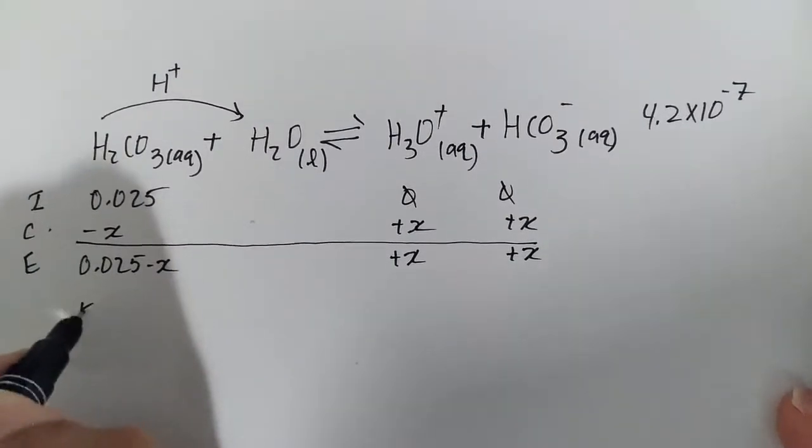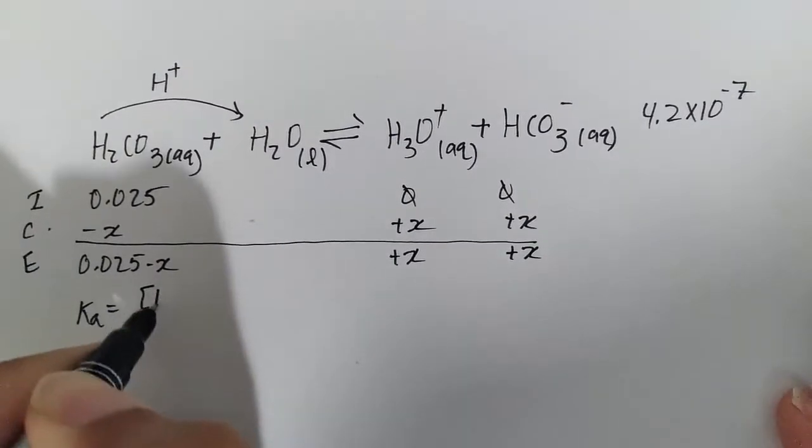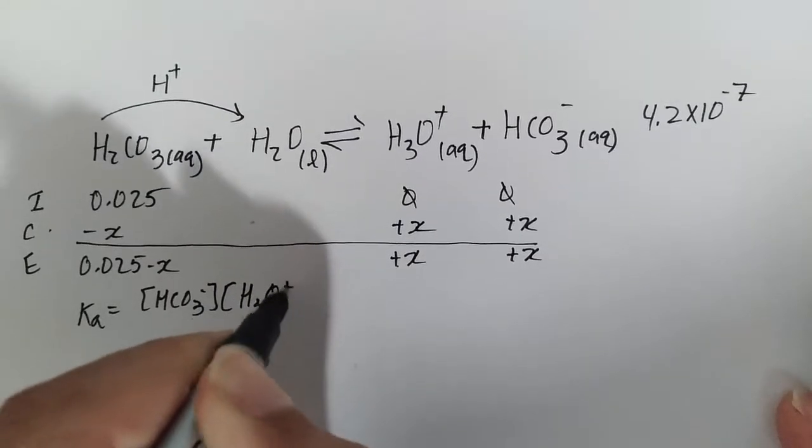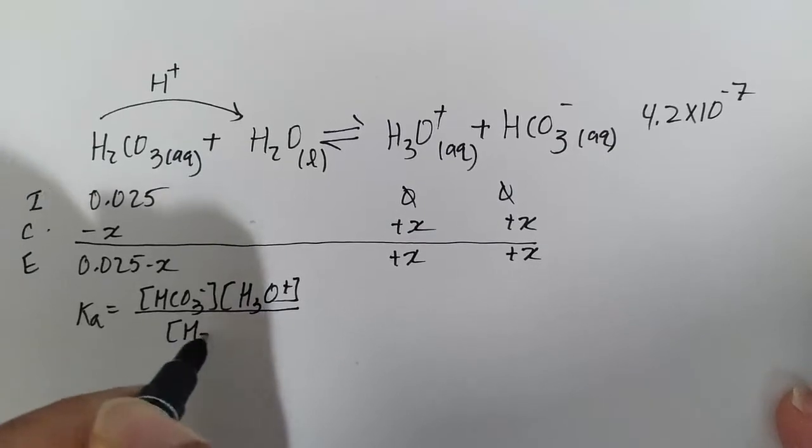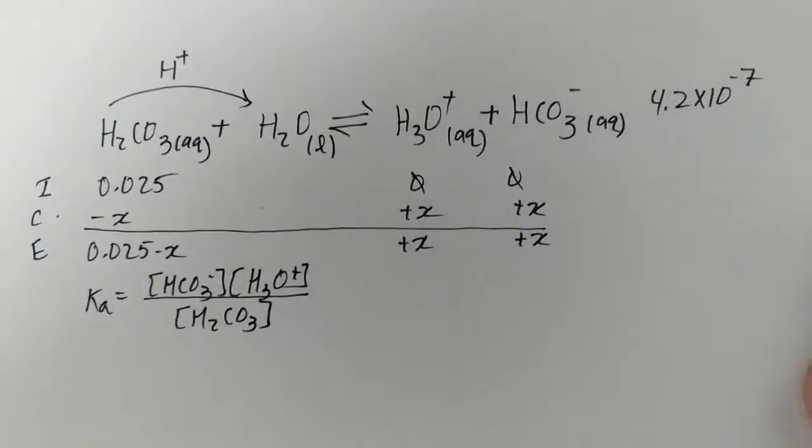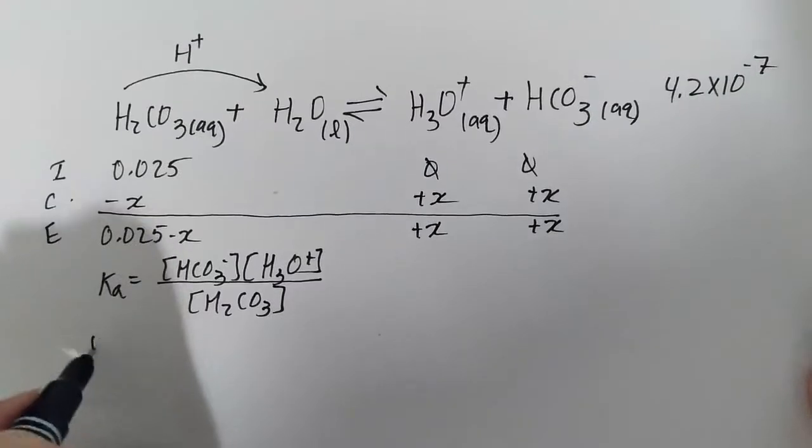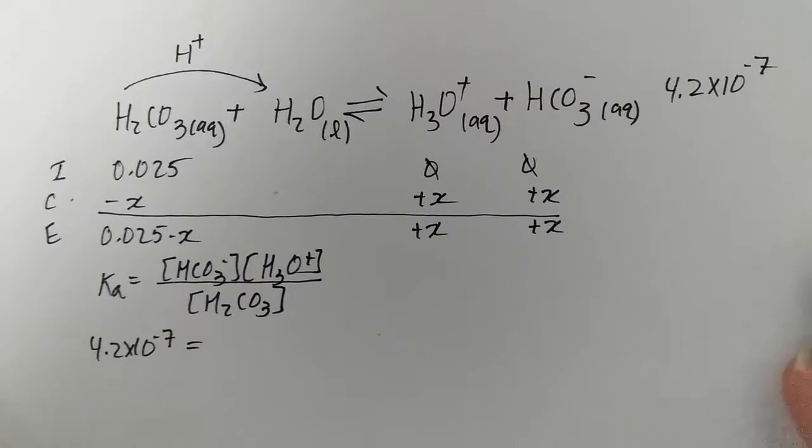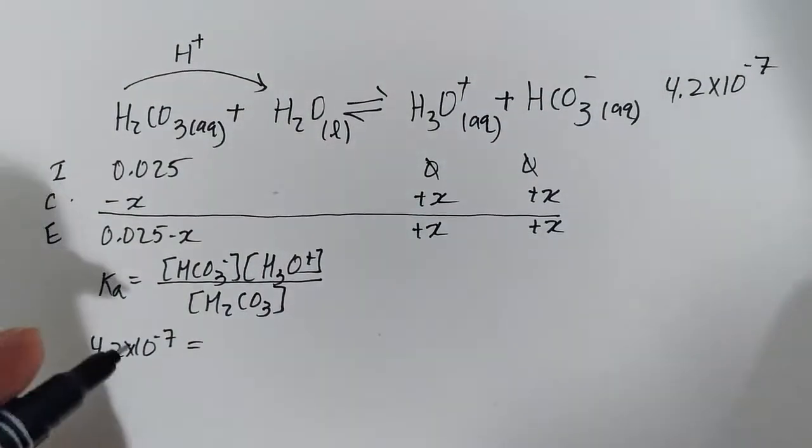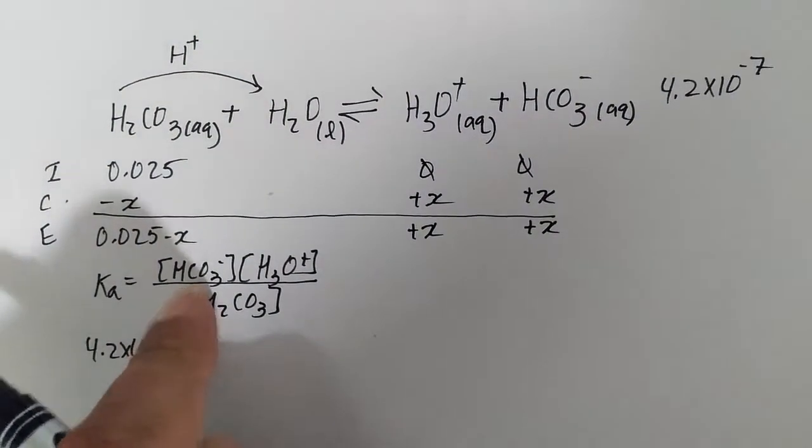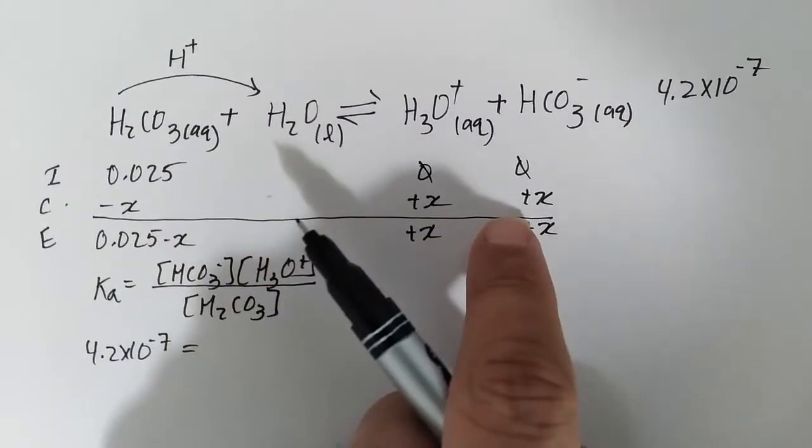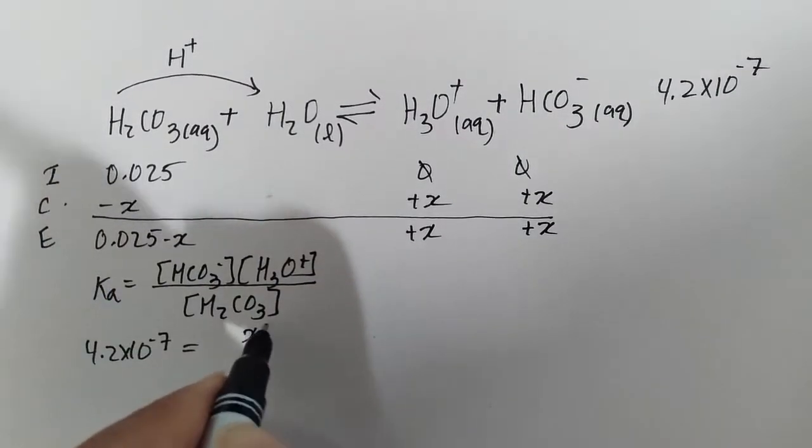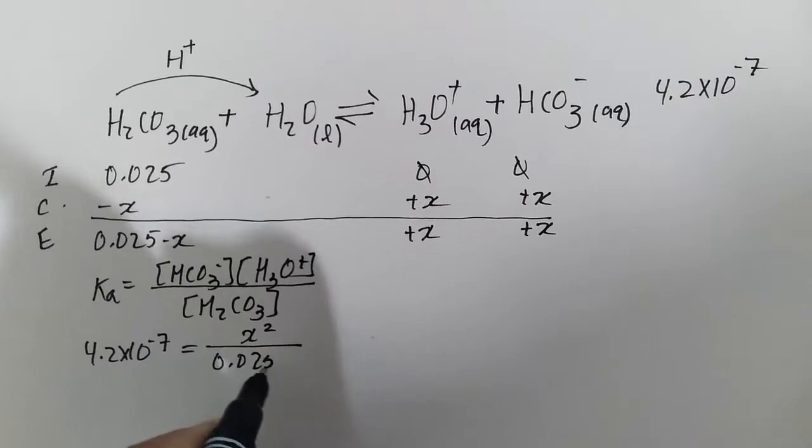The Ka for this reaction is going to be bicarbonate HCO3^- times H3O+ divided by carbonic acid H2CO3, and 4.2 × 10^-7 is the Ka that we got from our book. Remember these are usually quoted at a specific temperature, so I'm guessing this is room temperature. Bicarbonate at equilibrium is x, hydrogen ion at equilibrium is x. Carbonic acid at equilibrium is 0.025 - x.